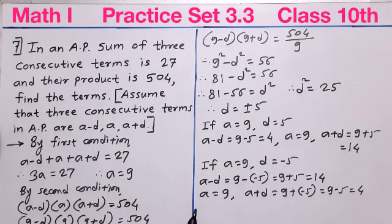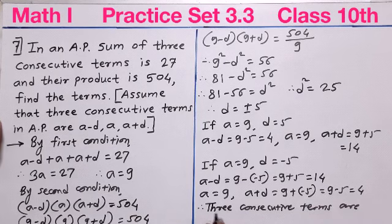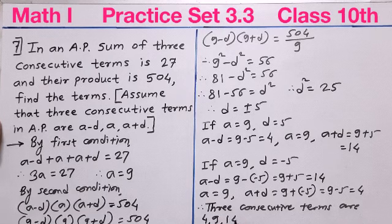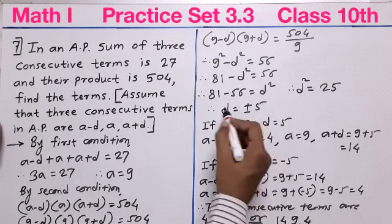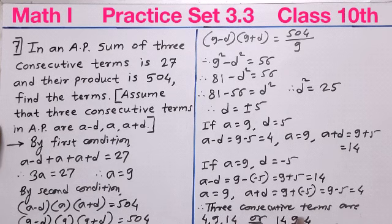Therefore, the three consecutive terms are 4, 9, 14 or 14, 9, 4. You can see there is no change in the answer even if you take D = positive 5 or D = negative 5. Only the position of 4 and 14 changes; the middle term remains the same.